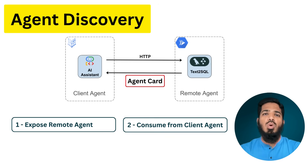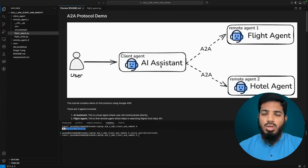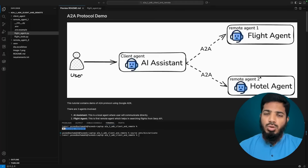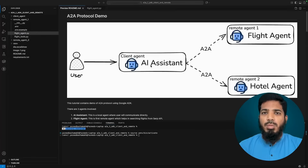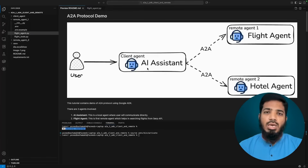Now let's implement this with Google ADK. In my example, I have this AI assistant which is the client agent where the user will interact. Google ADK provides two ways to expose an agent with A2A protocol, so to cover both scenarios I have two remote agents: one is a flight agent, one is a hotels agent. Both will use SERP API to fetch details, both will be exposed with A2A protocol, and both will be consumed and integrated with AI assistant. We will do this in four steps: set up the local environment, expose remote agent one, expose remote agent two, and then integrate both with AI assistant.